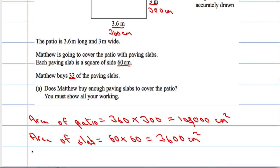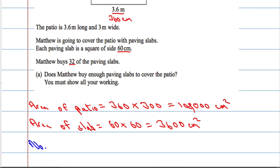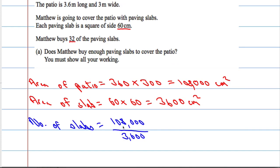Now we want to know the number of slabs. The number of slabs is going to be equal to the area of the patio divided by the area of the slab. If I find out how many slabs fit into the patio, that will tell me the number of slabs. So 108,000 divided by 3,600. I'm writing it as a fraction because this is going to make life a little bit easier. I can cancel above and below. Remember to use your skills with fractions.